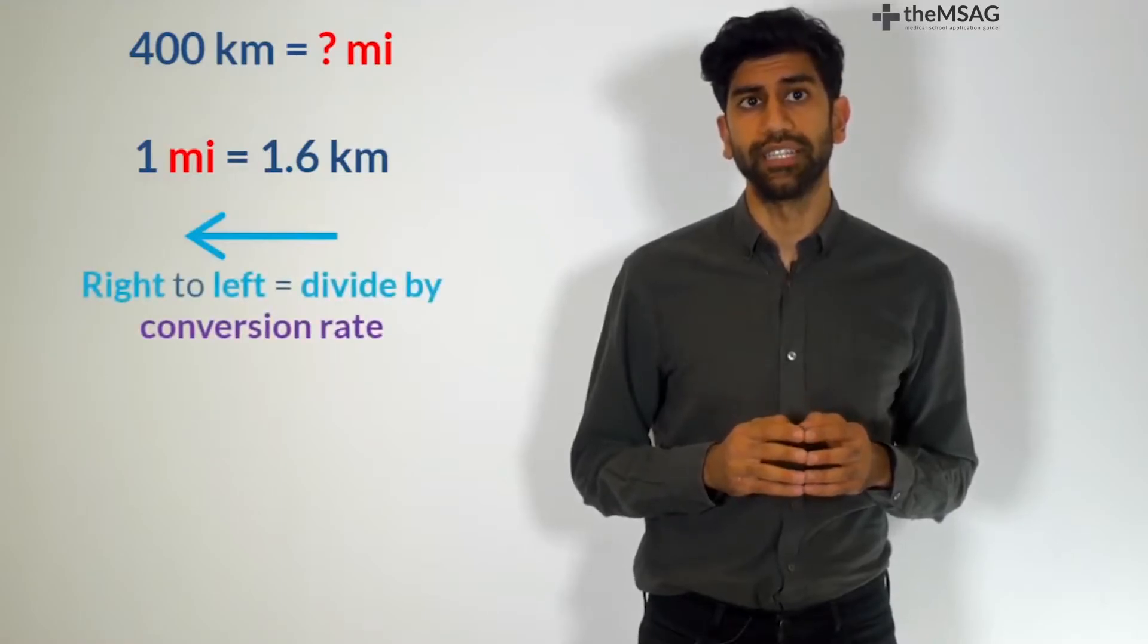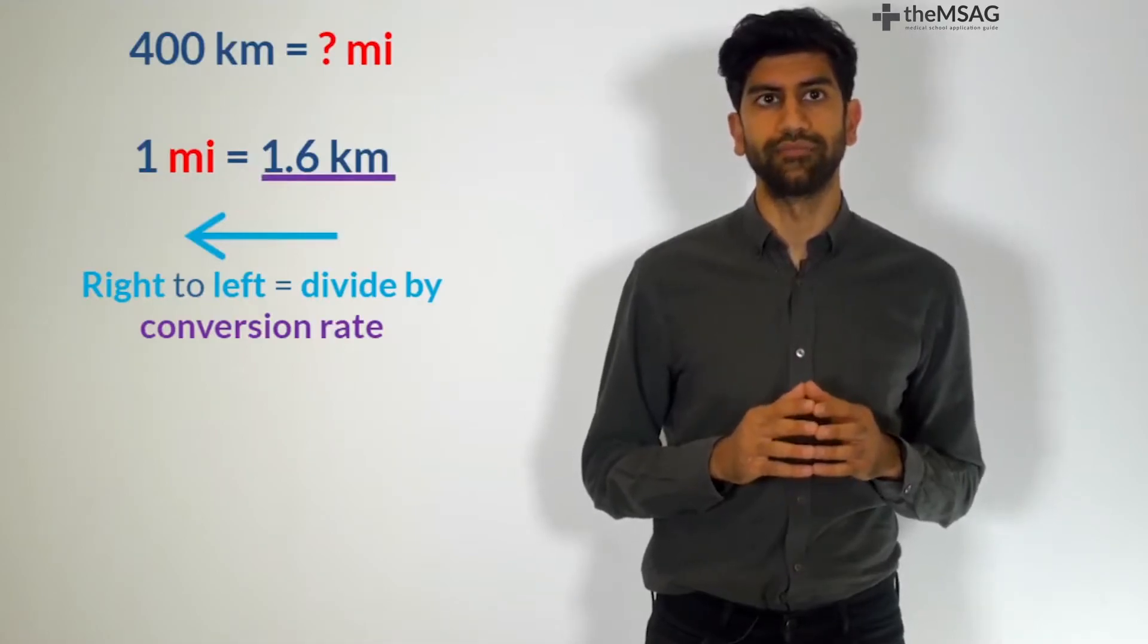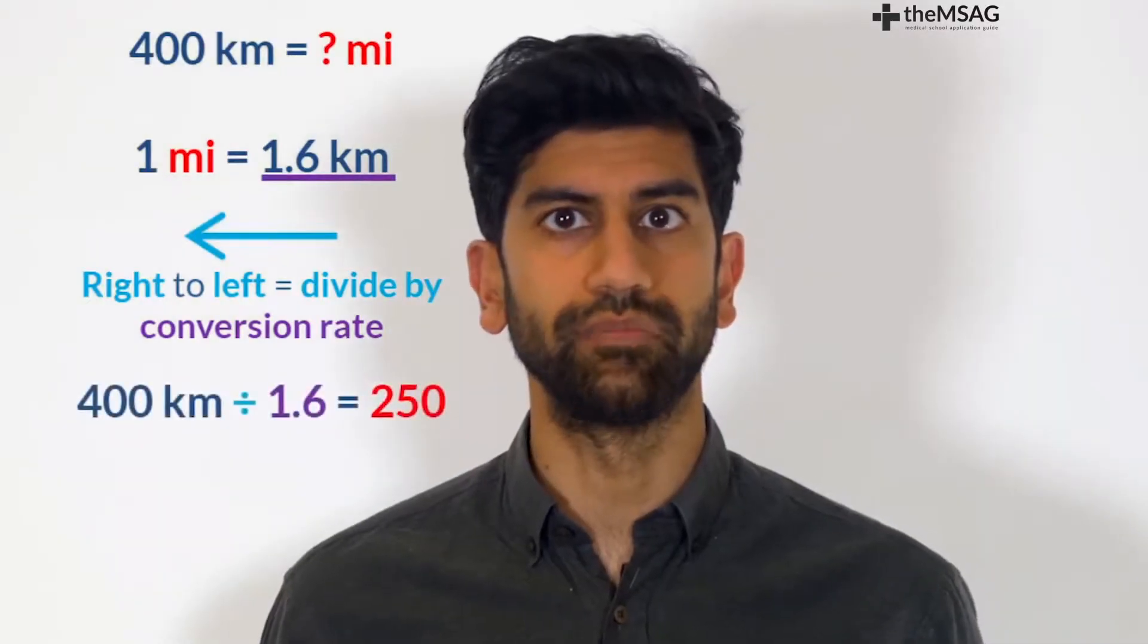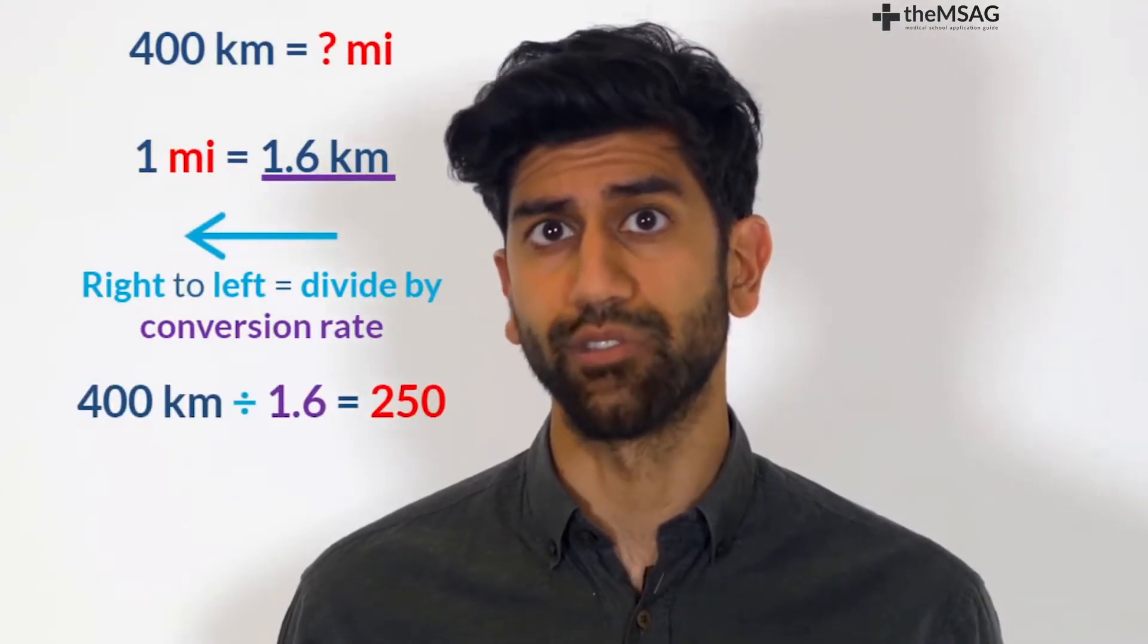Right to left means divide. Divide by the conversion rate which is just the number on the right. 400 kilometers divided by 1.6 equals 250. Your answer equals 250 miles.